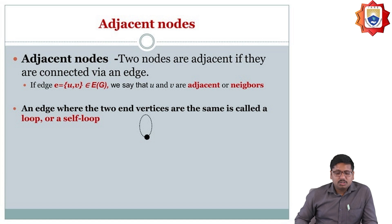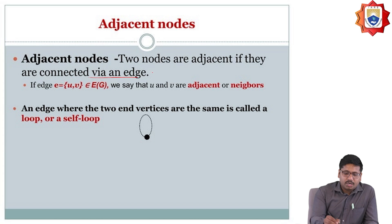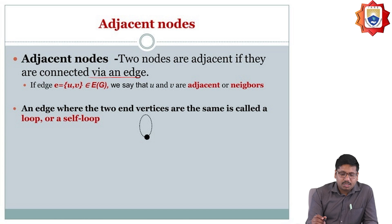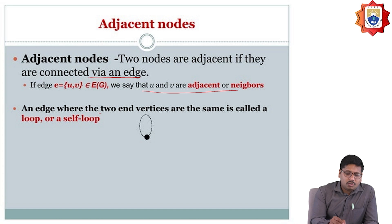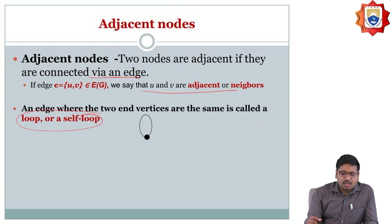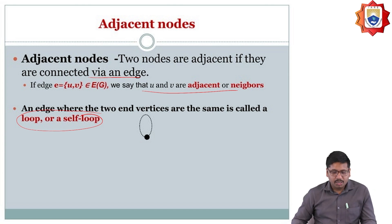Adjacent nodes: two nodes are going to be adjacent if they are going to be connected by an edge. If there is an edge, we can say they are adjacent. An edge where the two vertices are the same is called a self-loop.